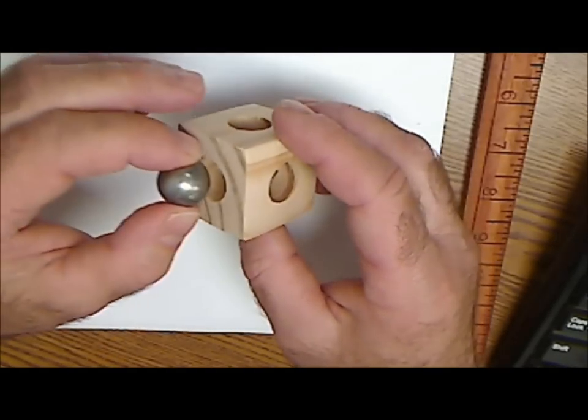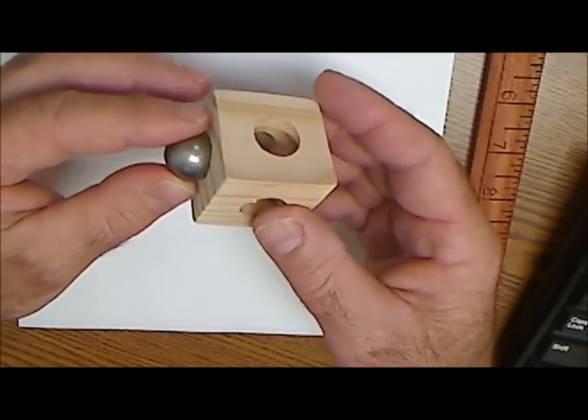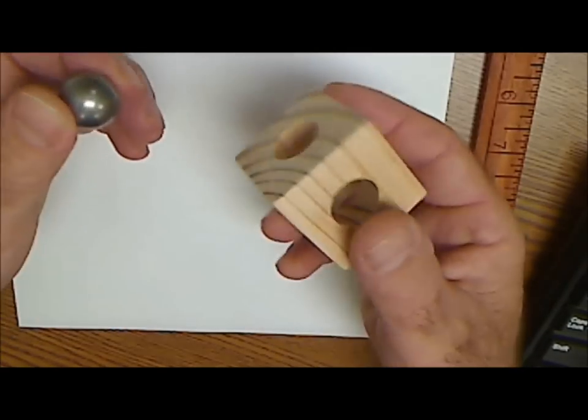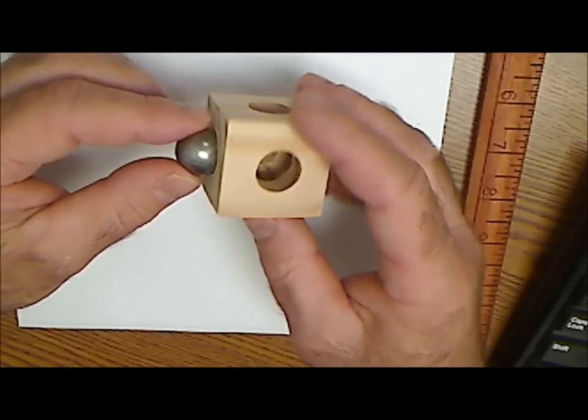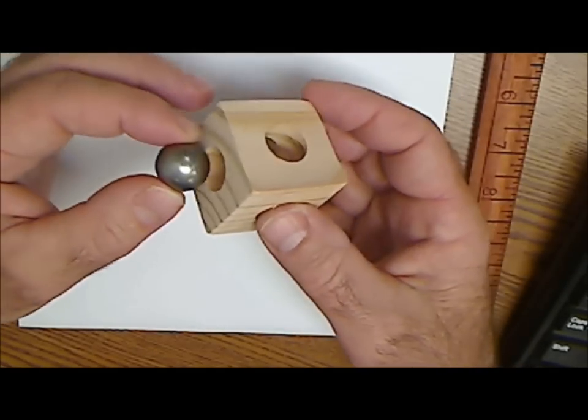Soaking the block lets it swell quite a bit and become pliable, and then when it dries it goes back to its original shape. I actually first saw this project on Instructables, not with the CNC router but with the drill press. So I hope you enjoy it.